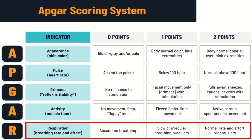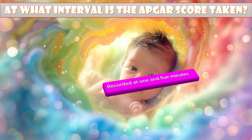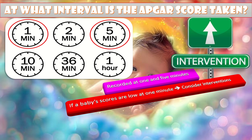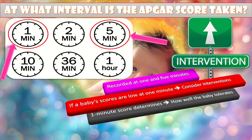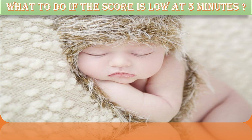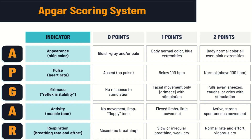At what interval is APGAR score calculated? The APGAR scores are recorded at 1 and 5 minutes. The 1-minute score determines how well the baby tolerated the birthing process, and if scores are low at 1 minute, medical staff will likely intervene. The 5-minute score tells the healthcare provider how well the baby is doing outside the uterus. If the score is still low after 5 minutes, medical staff may reassess the score after 10 minutes.